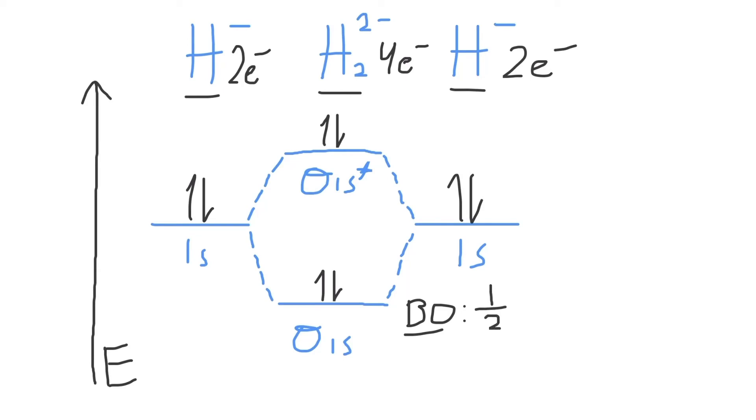The bond order equals one half times the number of bonding electrons, which are present in the sigma 1s bonding molecular orbital, minus the number of antibonding electrons, which are found in the sigma 1s star antibonding molecular orbital.